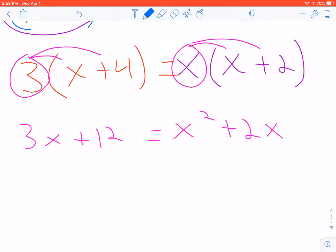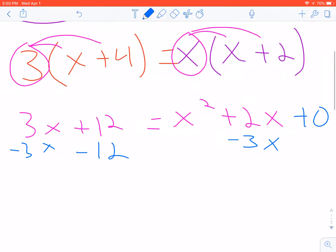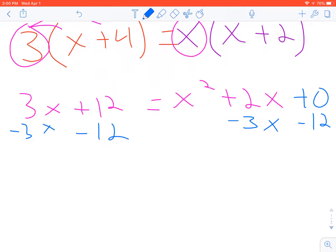So I'm going to subtract my 3x from that 2x and I'm going to minus 12. Everything on the left hand side becomes zero. I have x squared minus 1x minus 12 equals zero.